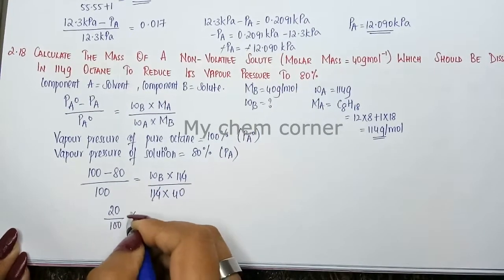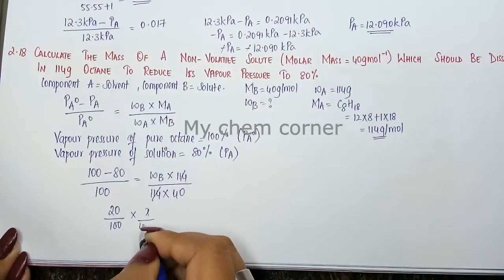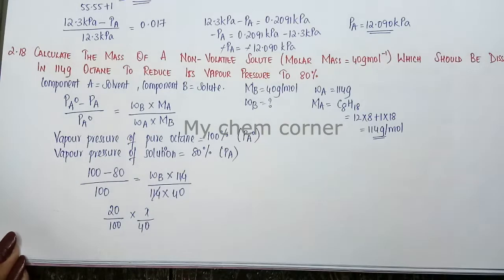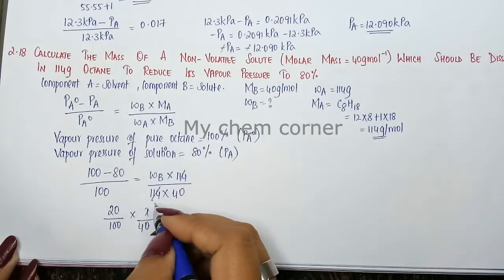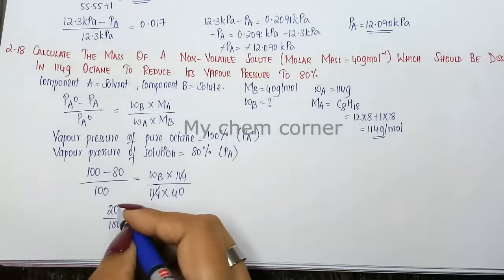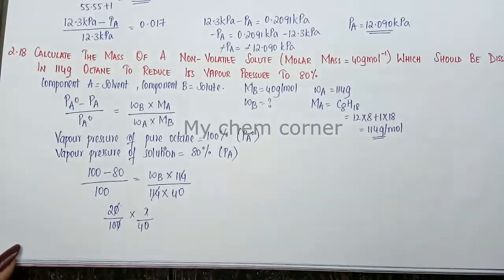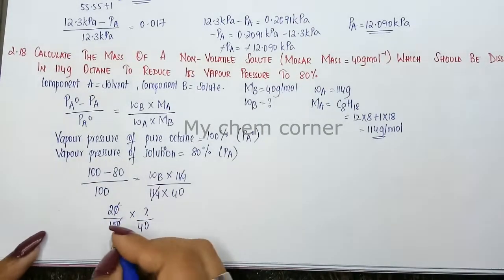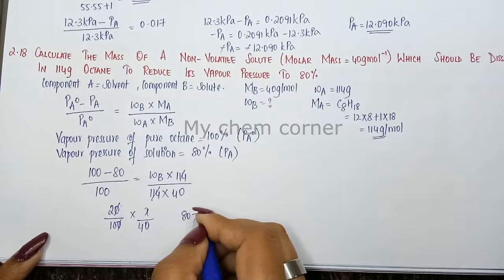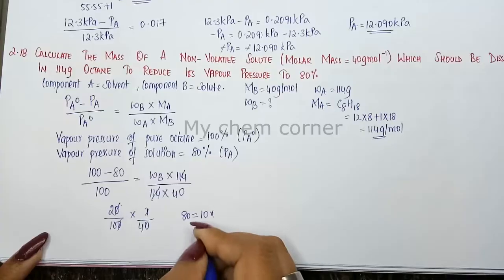In this case, the zeros will get cancelled. Now when you cross multiply, you will get 80 = 10x.